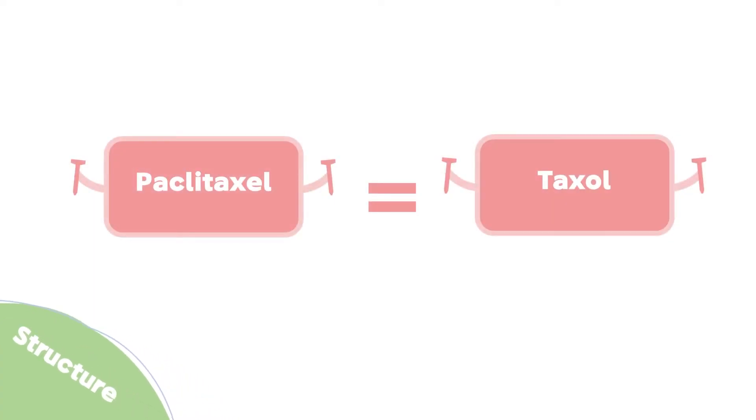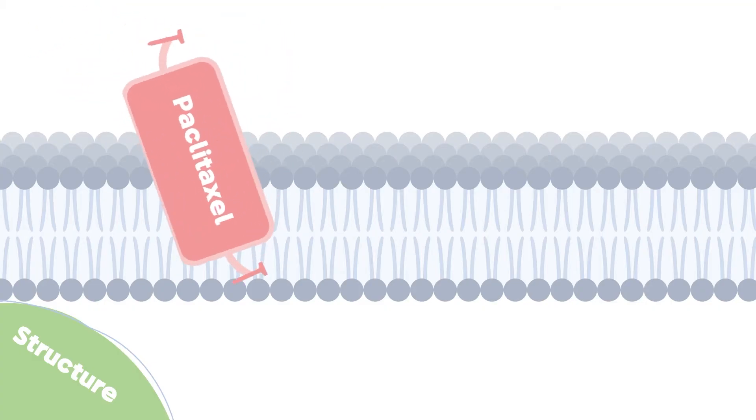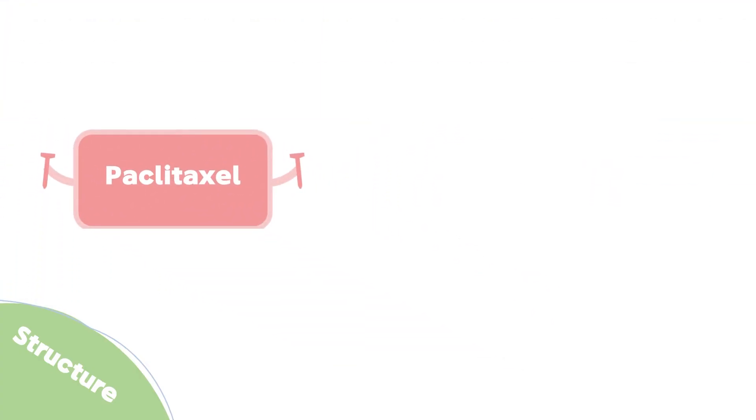Now let's move to the structure. First of all, taxol is just the brand name of paclitaxel, but they are the exact same thing. Paclitaxel has a big and hydrophobic structure that allows it to enter and penetrate the cancer cell. Inside the cancer cell, paclitaxel meets a protein that can readily assemble and disassemble.